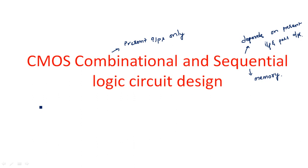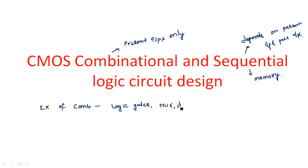Examples of combinational logic circuits include logic gates — all logic gates are considered combinational logic circuits — as well as multiplexers, decoders, and encoders. Full adders also come under combinational logic circuits because they don't have any memory element.